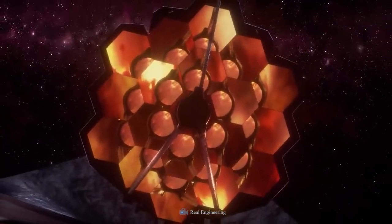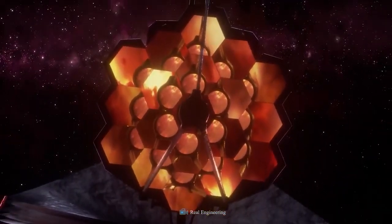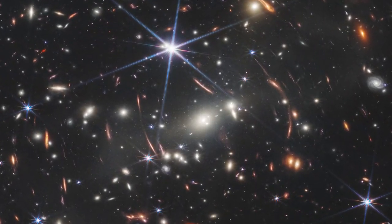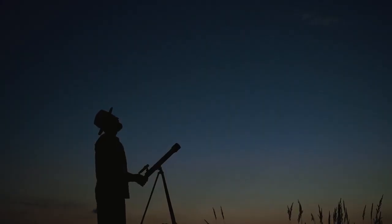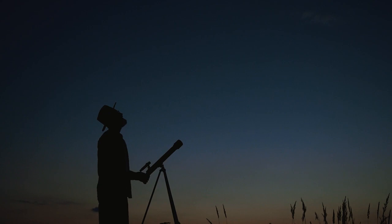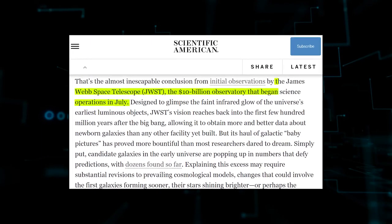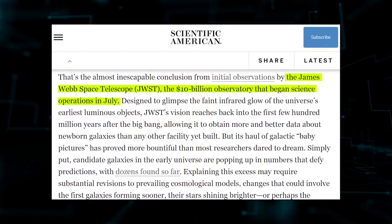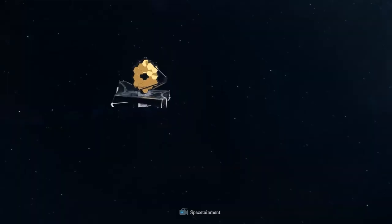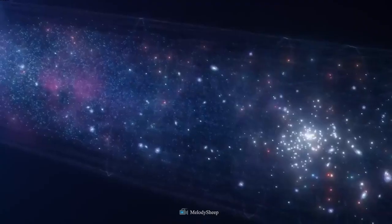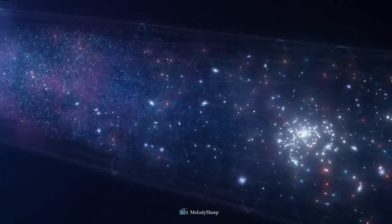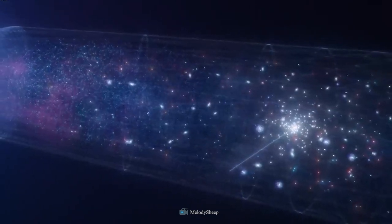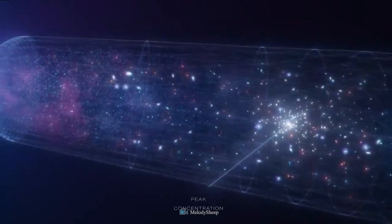This video will explore the shocking discovery made by the James Webb Telescope before the Big Bang. When it comes to the origins of the first stars and galaxies that illuminated the universe, astronomers are still in the dark, but they are getting closer to enlightenment with each new discovery. The $10 billion James Webb Space Telescope, or JWST, has begun science operations in July 2022, and its preliminary observations point in that direction. JWST's vision reaches back into the first few hundred million years after the Big Bang, allowing it to obtain more and better data about newborn galaxies than any other facility to date.